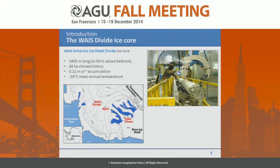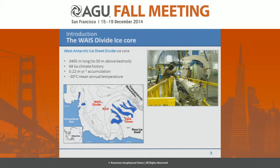So a bit about the WAIS Divide ice core. This is a core that was finished very recently by the U.S. Antarctic Program — it's an acronym for the West Antarctic Ice Sheet Divide. The core is 3,400 meters long, so it's a pretty deep core, drilled to 50 meters above bedrock. It was stopped above bedrock to prevent contamination of the basal hydrology. It has high accumulation, and it's located on the West Antarctic Divide, very close to the Byrd Station.